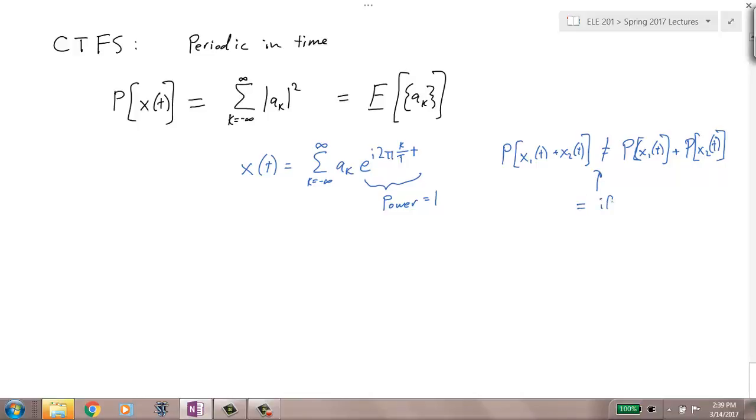So equal if x1 is orthogonal to x2. But what do we know about each of these signals here, these complex exponentials? They actually are orthogonal to each other. We talked about this during the Fourier, when we derived the Fourier series formula. So therefore, they each have power of 1, and they're orthogonal. Once you multiply them by a number, the power is the magnitude squared of a_k. So for each term here, the power is the magnitude squared of a_k, and just add them all up because they're orthogonal.